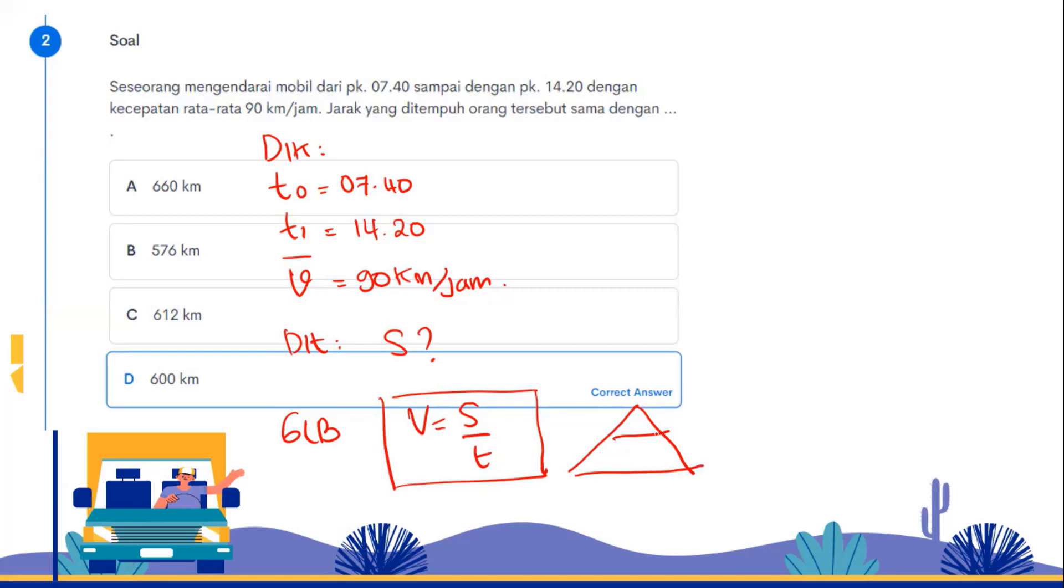S is space or distance, T is time. If you still forget, just look at the triangle. You just cover it. This is V, this is S, this is T. Let me ask, if S is what's being asked, cover the S. So the formula becomes S equals V times T. Once you know the formula, it's easy. You have the velocity, just need the time. Here, you solve for the time first. From 7:40 departure until 14:20. How do you do it? Just subtract: 14:20 minus 7:40.